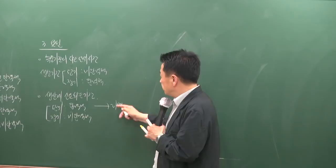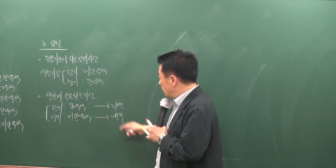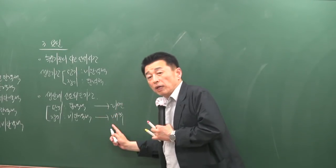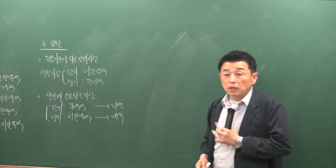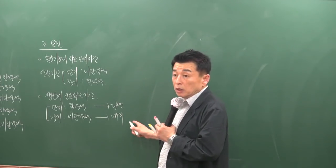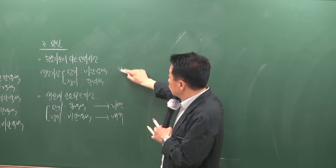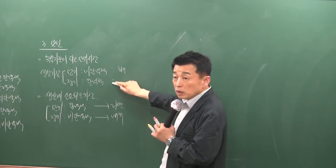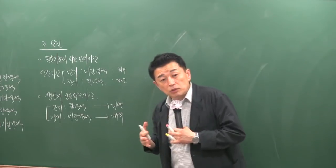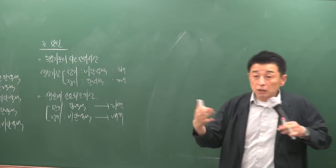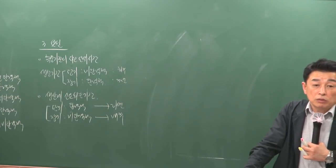예를 들어 라면을 생산할 때와 배추를 생산할 때, 배추가 시간이 더 많이 걸리니까 비탄력적이에요. 하루를 주고 생산하라 하면 생산하기 힘들지만, 3년의 기간을 주면 생산을 많이 늘릴 수 있어요. 그런 기준이라고 생각하시면 돼요.